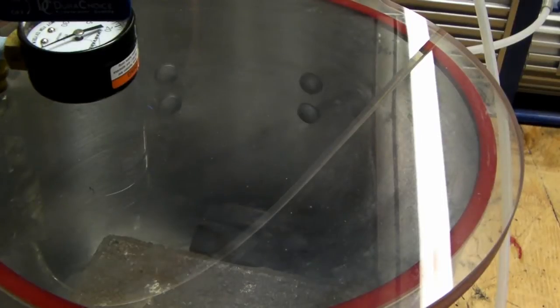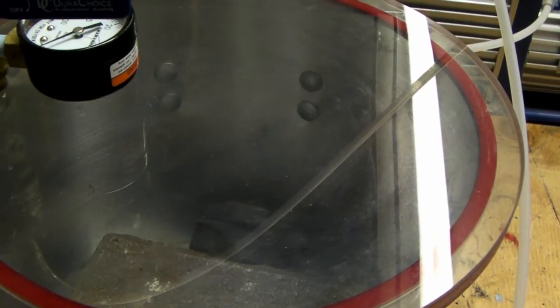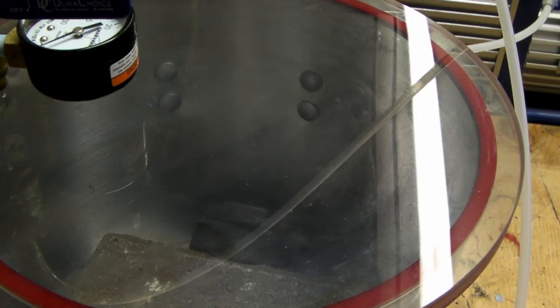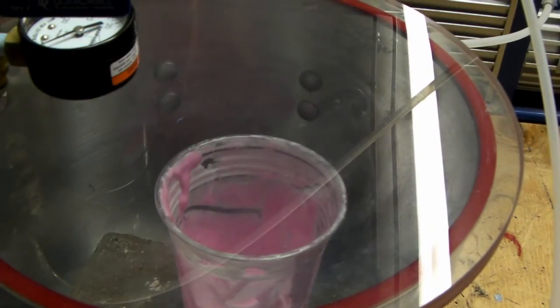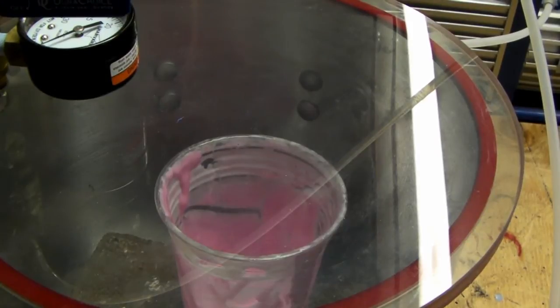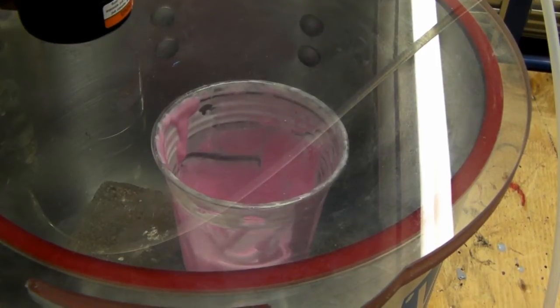Okay we are back, we're ready to degas this. I got it all mixed together, got the sides scraped down really good, maybe a couple tenths extra of the activator. It's a nice even pink color. I'm going to scrape all this off and put this in the vacuum chamber on that brick so you'll be able to see it.